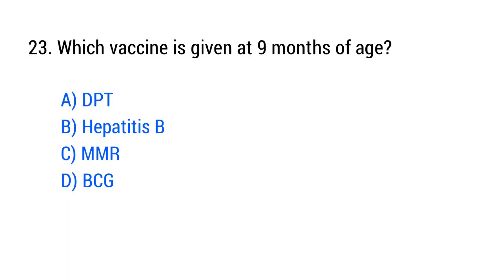Question No. 23. Which vaccine is given at 9 months of age? The right answer is Option C: MMR.